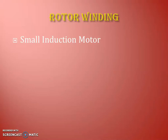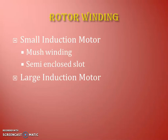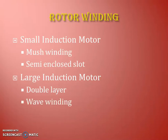Our next design step is rotor winding. For smaller induction motors, we normally use mush type single layer winding and semi-enclosed type hop slots. For larger induction motors, we go for double layer winding — either lap or wave type. We normally use two bars per slot, but if more than two bars per slot are used, it is called barrel winding and it is normally wave wound. For larger motors, we go for bar type winding instead of round conductors.